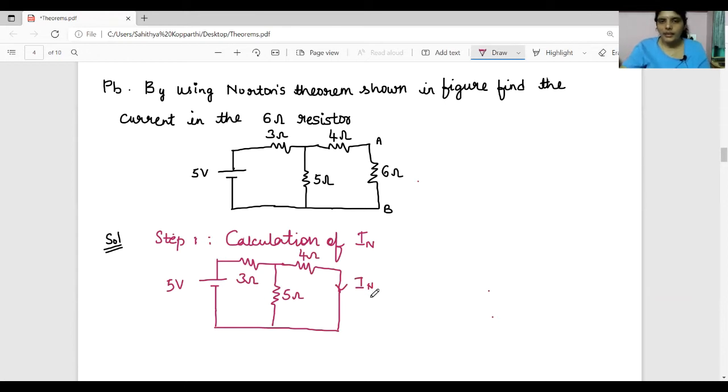Now I will calculate IN by using current division rule. So in order to apply current division rule, I must know the total current. So let that be I. Here I is nothing but V divided by R equivalent. So first calculate R equivalent. Here we observe keenly, 5 ohm and 4 ohm are in parallel and their equivalent resistance is in series with 3 ohm.